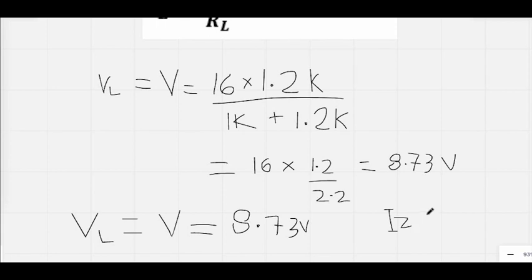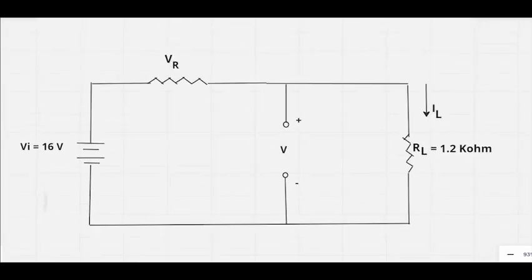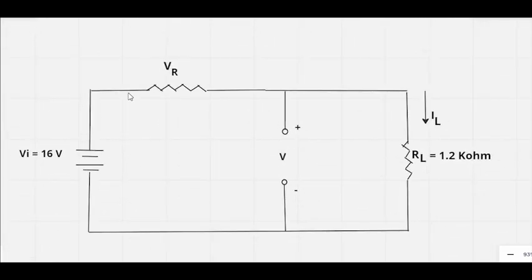Forgive my poor drawing. Iz and Pz would be 0. Let's calculate VR now. VR is nothing but the difference between Vi...